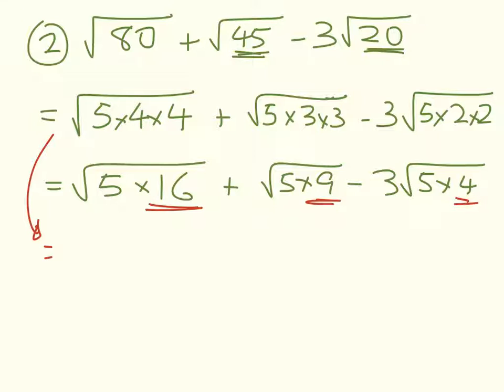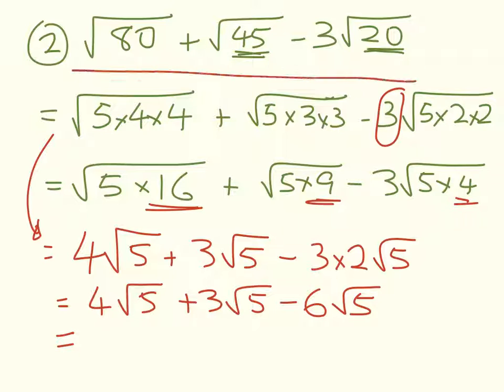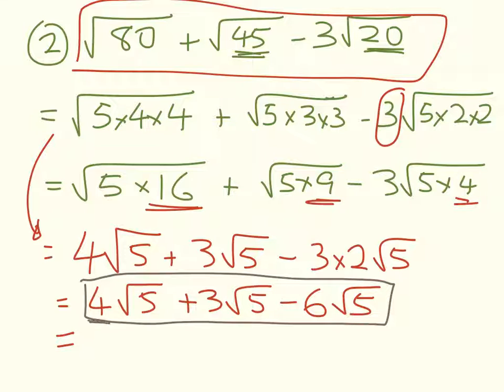This is what we talked about earlier—we're hunting for the squares. Now we can take those squares out the front. So the square root of 4 squared is 4, so 4 root 5 plus 3 root 5 minus 3 times 2 root 5. So now we've got 4 lots of root 5, 3 lots of root 5, that gives us 7, take away 6 leaves us with just root 5.